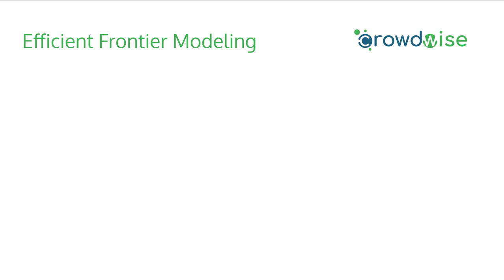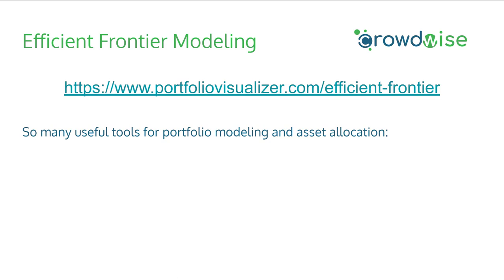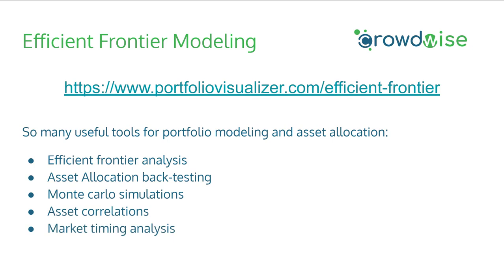One of the key things that came out of Modern Portfolio Theory is called the Efficient Frontier. All the charts we're going to be showing in the following slides were created from PortfolioVisualizer.com. It's a fantastic resource with so many useful tools for portfolio modeling and asset allocation, such as Efficient Frontier Analysis, Asset Allocation Backtesting, Monte Carlo Simulations, Asset Correlations, Market Timing Analysis, and much more. The best part — it's completely free. I get no benefit from sending you over there, but I have found it so useful that I have no doubt you'll find it useful as well.